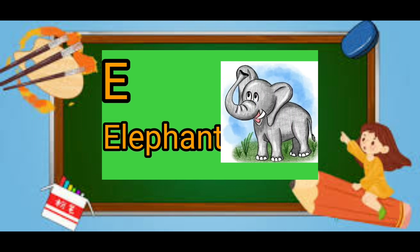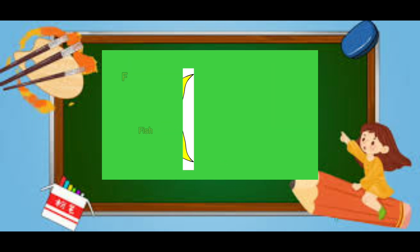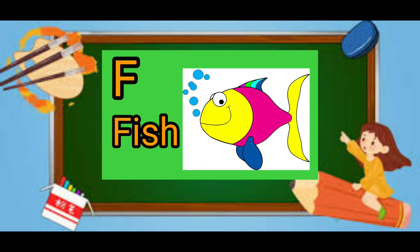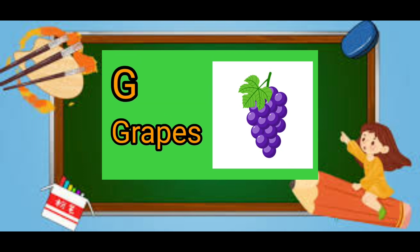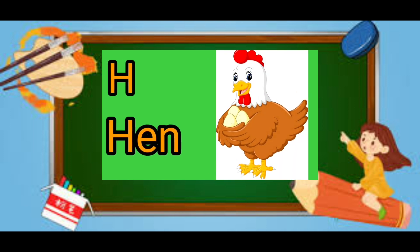E for elephant, elephant means haati. F for fish, fish means machli. G for grabs, grabs means angoor.